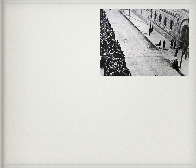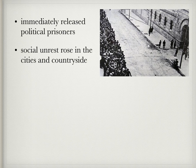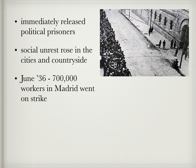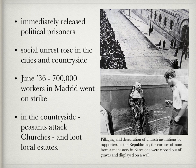After their newly elected win, the Popular Front — now the legal Spanish government — immediately released the political prisoners who had been in jail since 1934. Many regular criminals likely also got out. Social unrest rose in the cities and countryside. In June 1936, 700,000 workers in Madrid went on strike. In the countryside, peasants attacked the local Catholic church and looted local estates. The corpses of nuns from a monastery in Barcelona were reportedly ripped from graves and displayed on a wall.